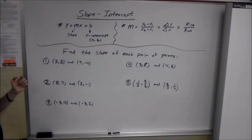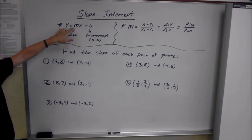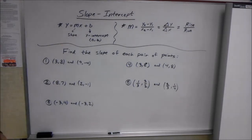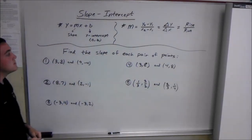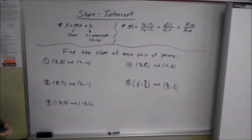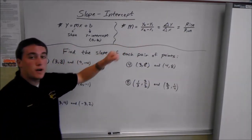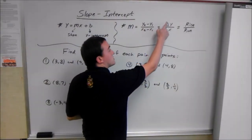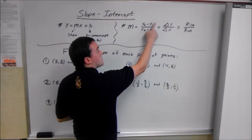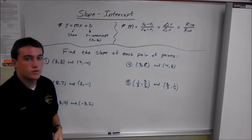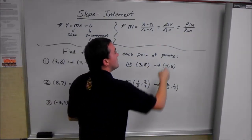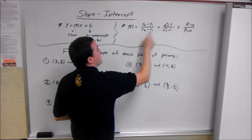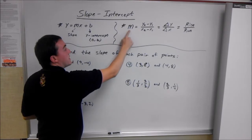Given y equals mx plus b, m is our slope, and b, that last number, is our y-intercept — that's where it hits the y-axis. Our slope equation is m equals y2 minus y1 over x2 minus x1. This is also known as the change in y over the change in x, or rise over run. You use rise over run to graph it, and you use the slope equation to find the actual slope.